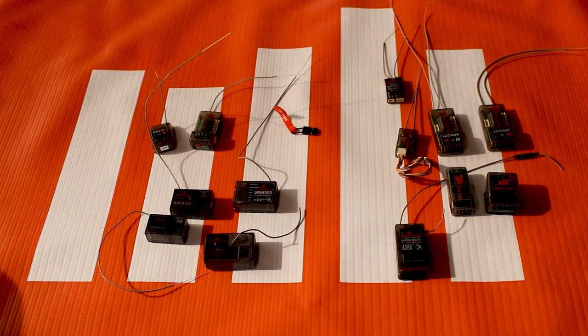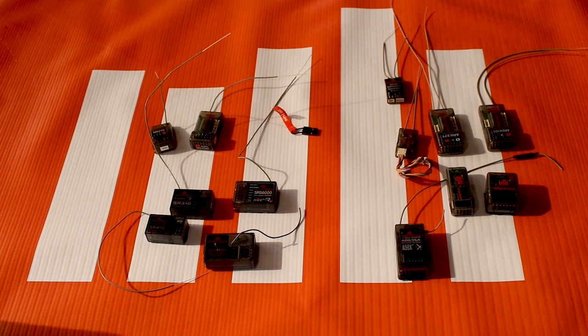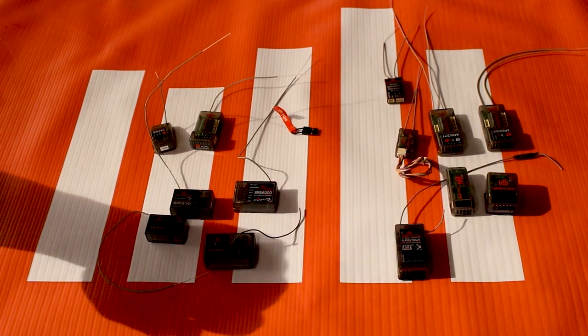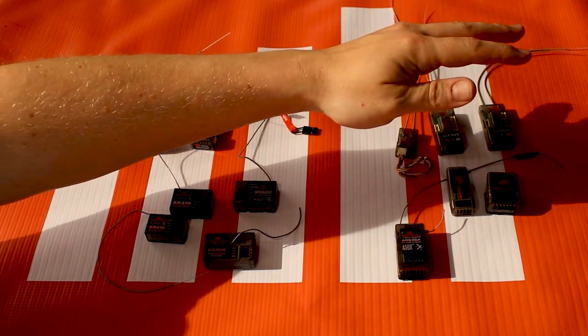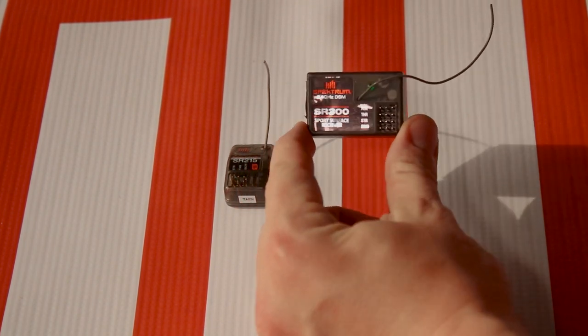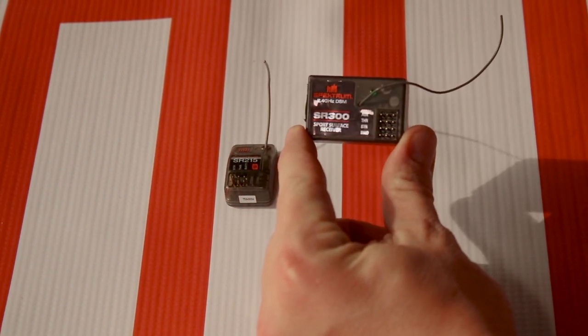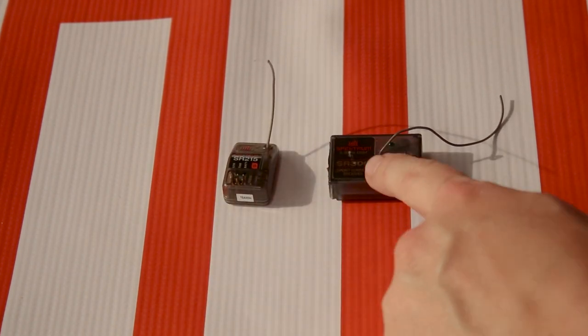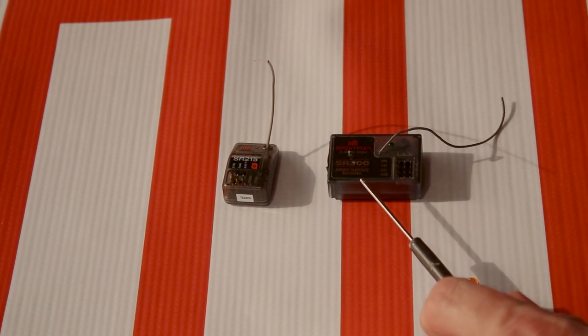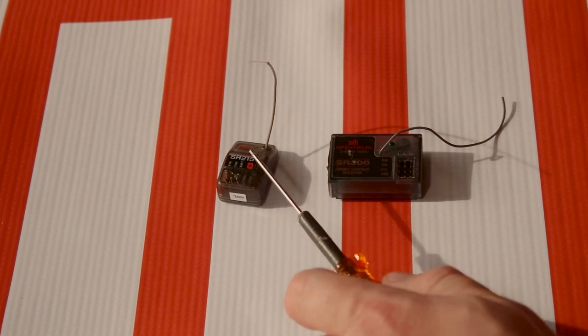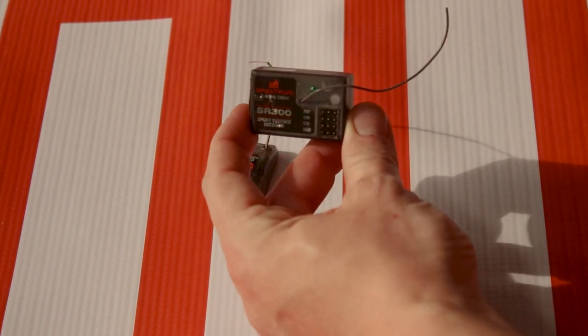Another troubleshooting tip is to look at the receiver and see what modulation is on the receiver and compare that with the specs of your transmitter. There is a big difference between these two receivers. This is the older SR-300 receiver and this is an SR-215 receiver, a current receiver that we sell today. The SR-300 is a DSM protocol receiver and then this one is a DSMR protocol receiver.